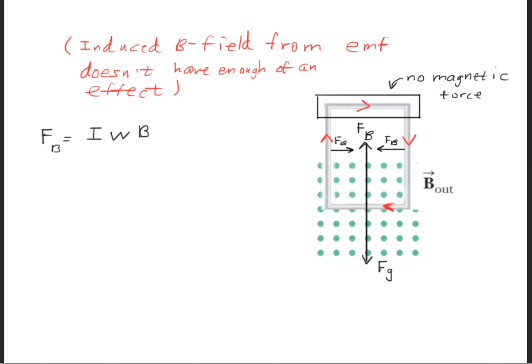Where do we get the magnetic forces? Using your right-hand rule, focusing only on the B field coming out of the page and the current, point your finger in the direction of the current and your middle finger in the direction of the B field — your thumb will be pointed upwards. Thus, the magnetic force on the bottom of the wire is directed upwards. You might wonder why we use the external B field rather than the induced B field. The induced EMF and induced B field do not produce a magnetic force strong enough to matter here; the effect of the induced magnetic field on force is negligible.